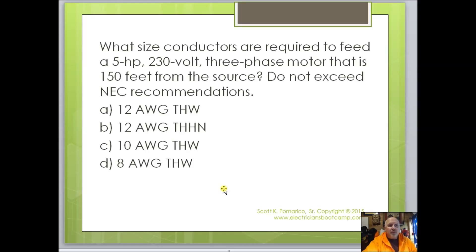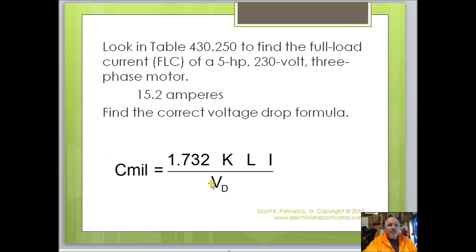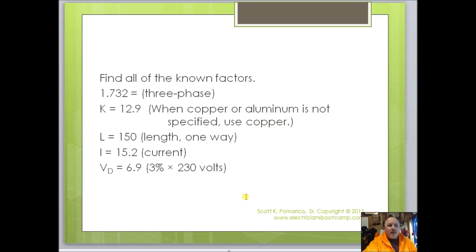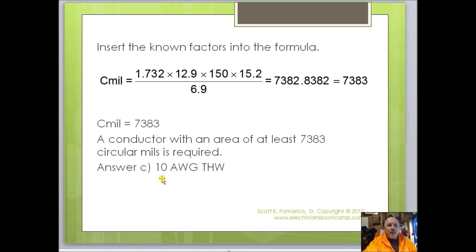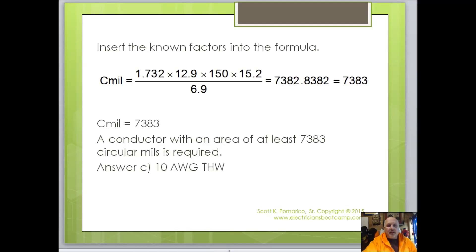Another example — a feeder: 5-horsepower, 230-volt, 150 feet away. Do not exceed the NEC recommendations. Using table 430.250, I found 15.2 amps. Plugging into the circular mills formula with all that information, I found that number 10 wire is required. This is another example of a voltage drop problem you might see on the test.